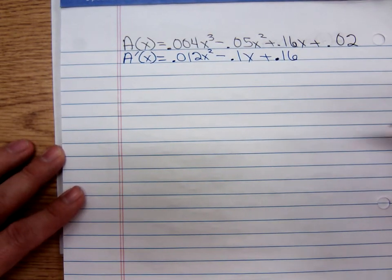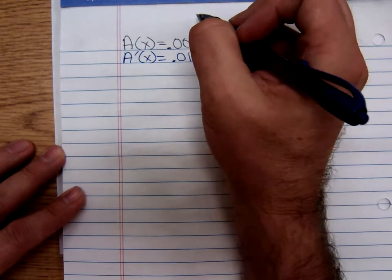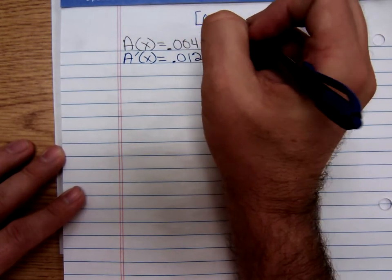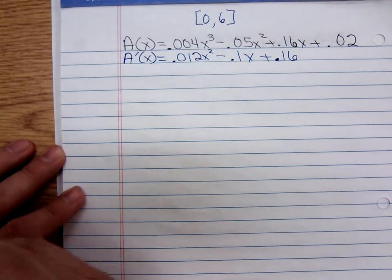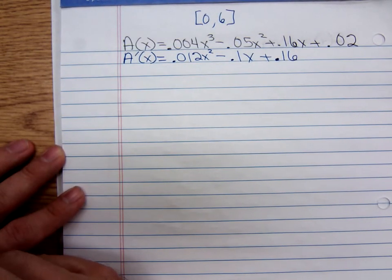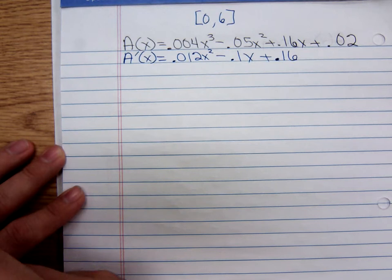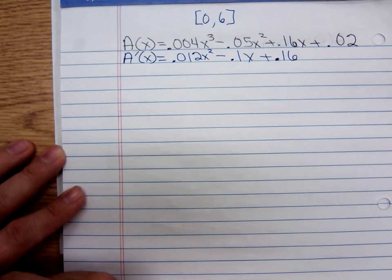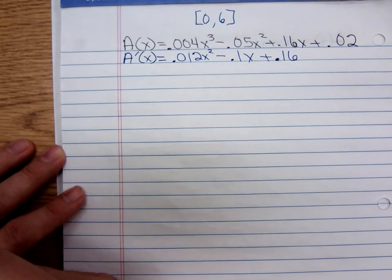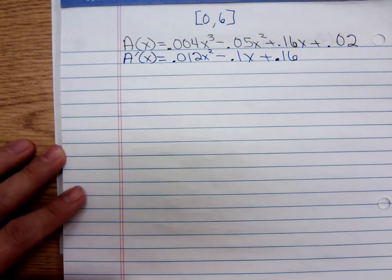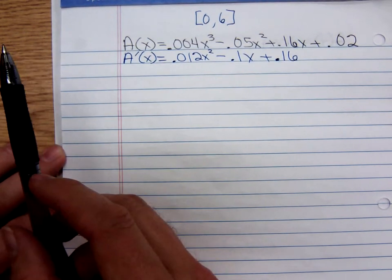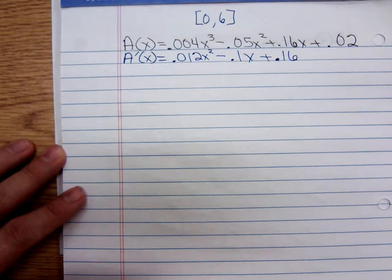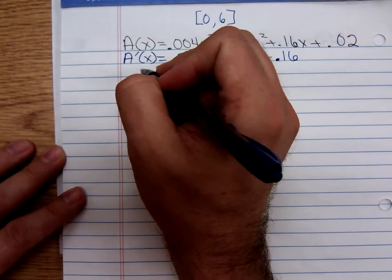We want to know when is this derivative equal to zero. When is it undefined? Well, it's always defined. Before I forget, I better remember we're only concerned about the time span from zero to six. We're only concerned about six hours after the person drank that hard liquor. So we set the derivative equal to zero.